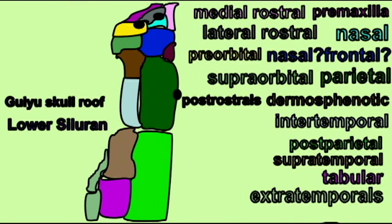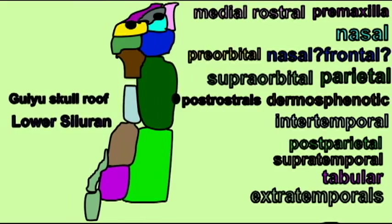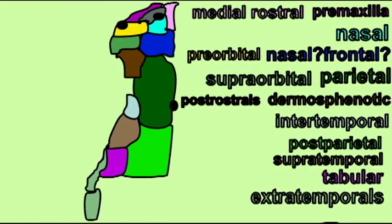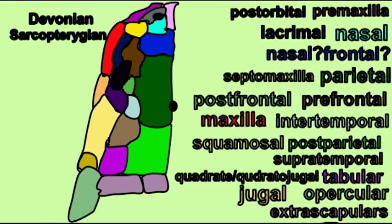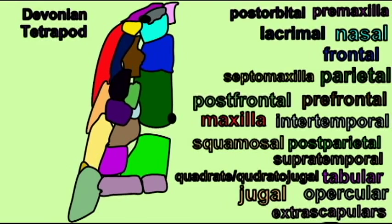And when the ancestors of mammals lost the prefrontal, postfrontal and postorbital bones, then the opening for the orbit fused with the synapsid opening for the jaw muscles.